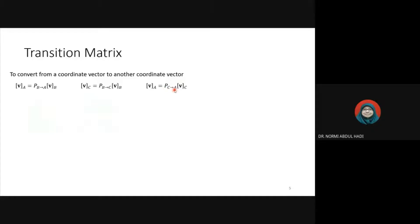So actually you have six different transition matrices: from A to B, from B to A, from C to B, from B to C, from A to C, and from C to A. All of these P matrices are called transition matrices.